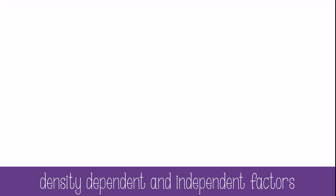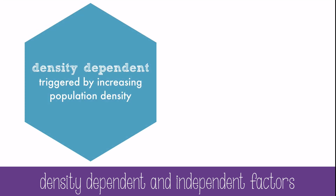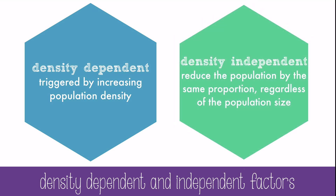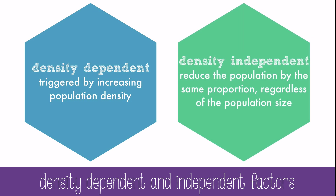Limiting factors can be categorized as density-dependent or density-independent factors. Density-dependent factors include resource limitations such as shortages of food or nesting sites, and they're triggered by increasing population density. With density-dependent factors, an individual's chance of surviving or reproducing depends on the number of individuals in the same area. Density-independent factors, such as weather, floods, and fires, reduce the population by the same proportion regardless of population size. Both of these can affect where the carrying capacity is.